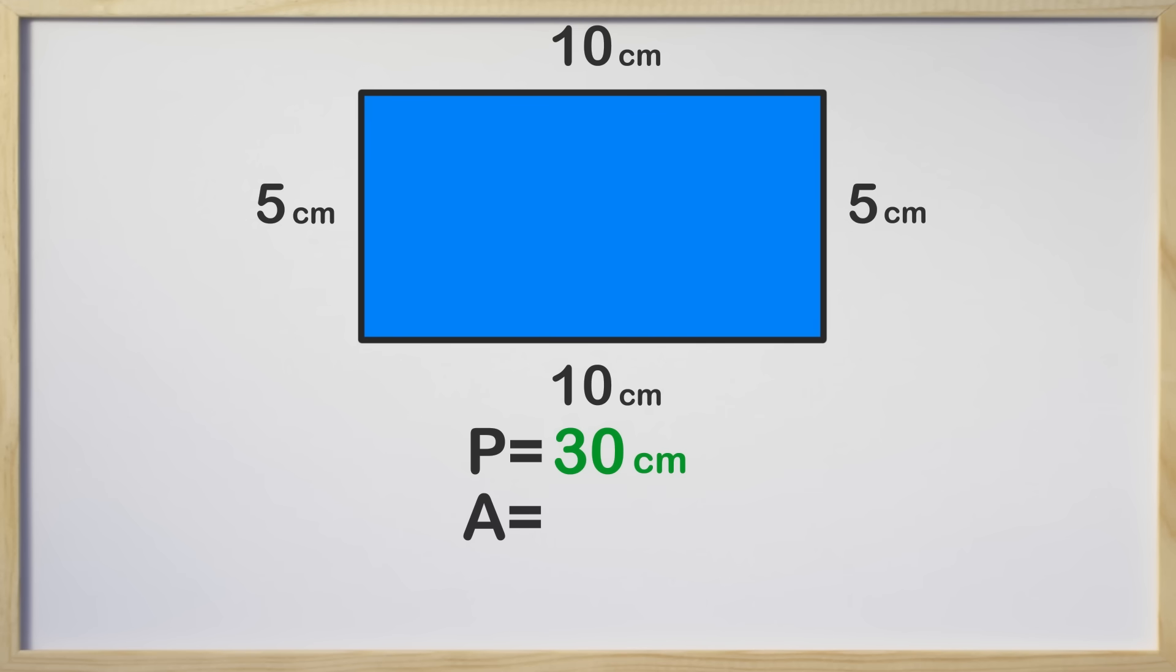Something that confused me for a little while was the difference between perimeter and area so let's talk about it. Perimeter is the length around the object and area is everything inside the shape. You do not want to confuse perimeter and area. The perimeter is 30 in this problem.